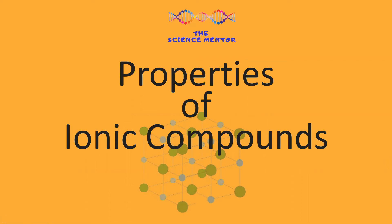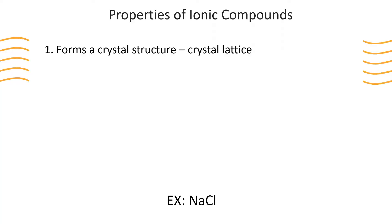Hey, it's Doc Williams, and today we're going to talk about properties of ionic compounds. Ionic compounds will form a crystal structure, also called a crystal lattice. This is due to the electrostatic attraction between the positive ions and the negative ions within the ionic compound.